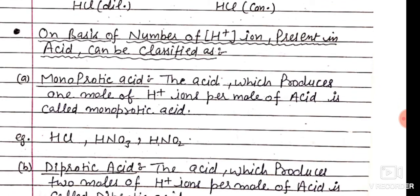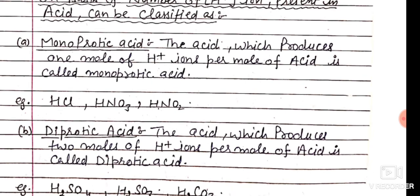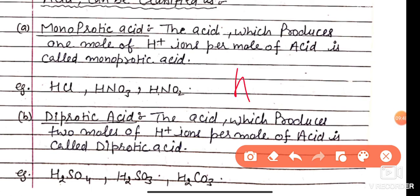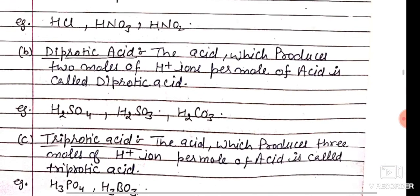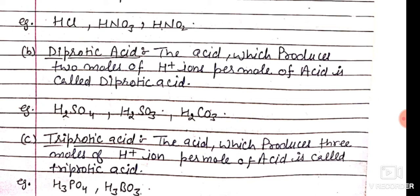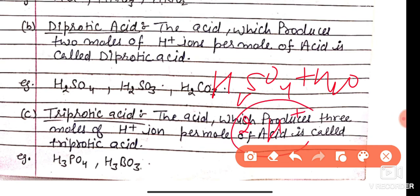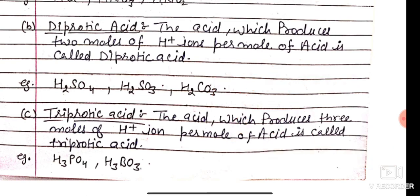On the basis of the number of H-positive ions, acids are classified as Monoprotic, Diprotic, and Triprotic acids. Monoprotic acids produce one H-ion per mole of acid. Diprotic acids produce two moles of H-ion per mole of acid — for example, Sulfuric acid (H₂SO₄) releases two H⁺ ions. Triprotic acids release three H-ions per mole — for example, Phosphoric acid (H₃PO₄).